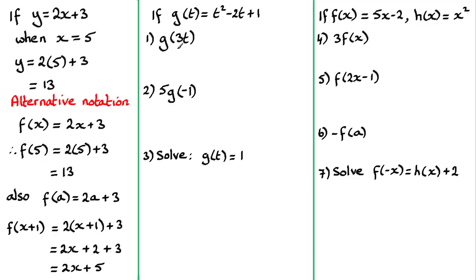So in this first one, g of 3t, we're going to replace the t here with 3t. So what are we going to get? You're going to get all of 3t squared in place of t squared, minus 2 times 3t in for that t there, and then plus the 1. And if you expand this out, you're going to end up with 9t squared minus 6t plus 1.